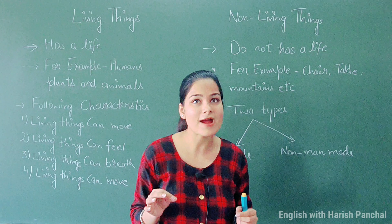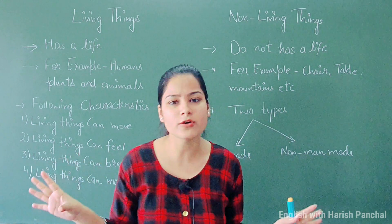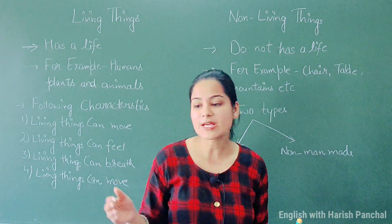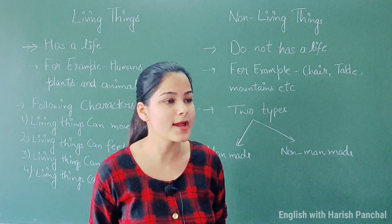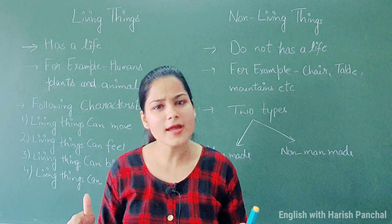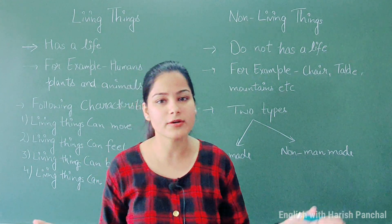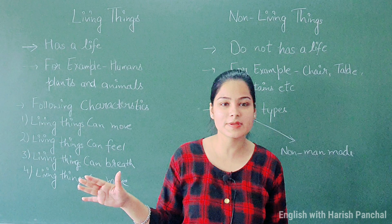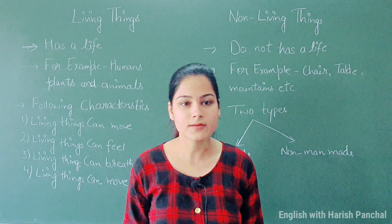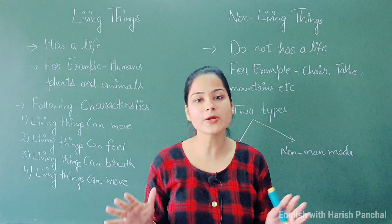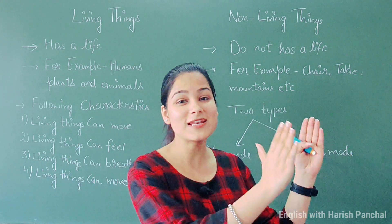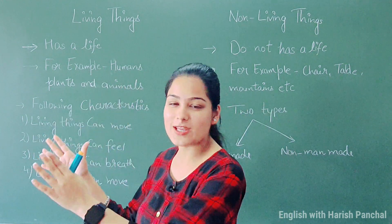There are several kinds of things around us. You can see your chair, table, fan, benches, bed, almirah, box — several kinds of examples you can see around your surroundings. But how will you distinguish between what is living and what is non-living?